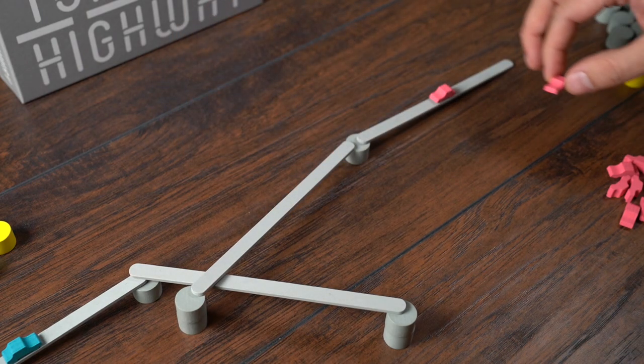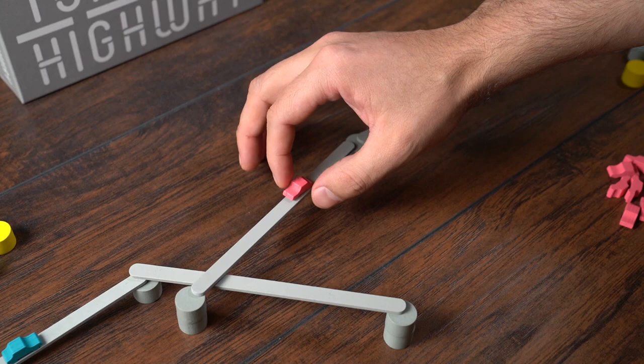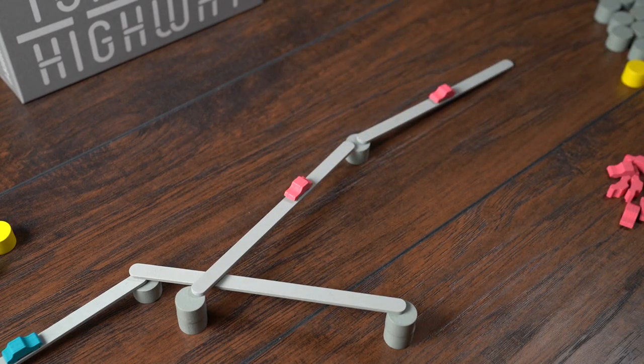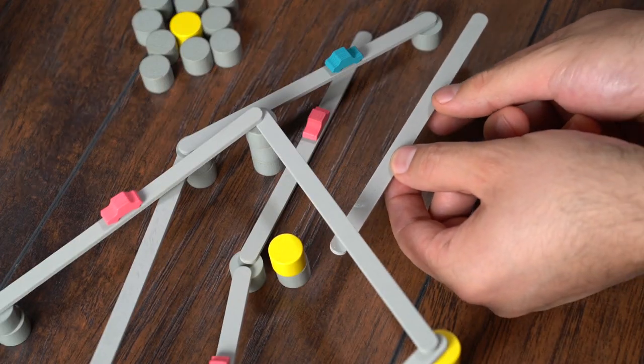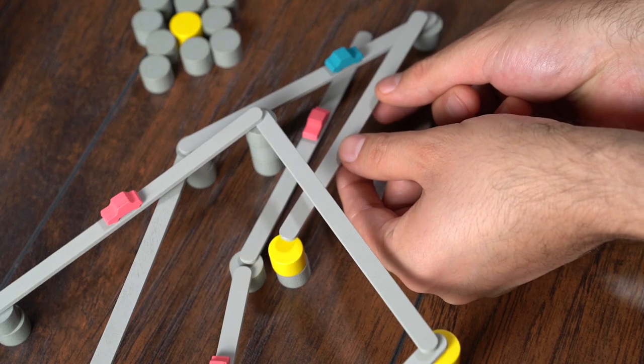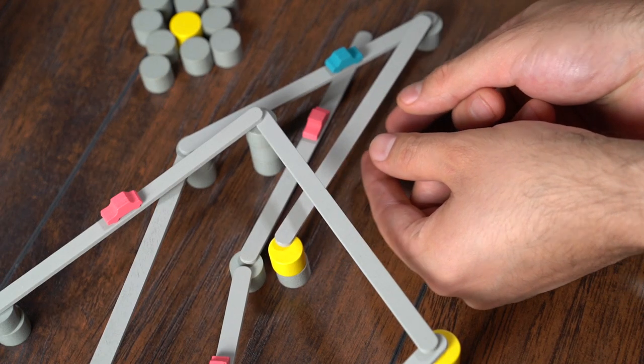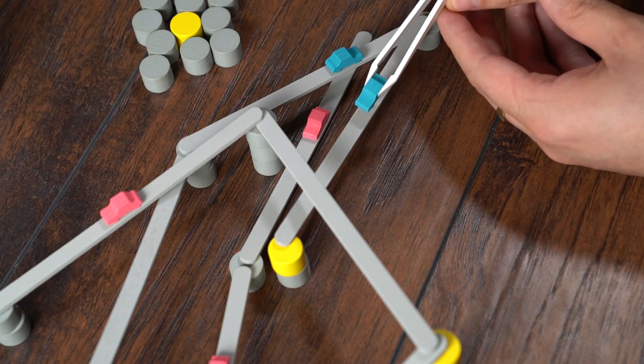The game includes tweezers in order to reach tight spaces that are bound to arise. You can also earn a car if you go underneath an opponent's road, but I found that much harder to do without knocking everything over. The tweezers are really handy if you want to attempt it.